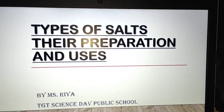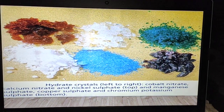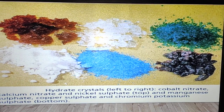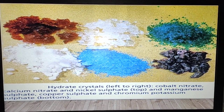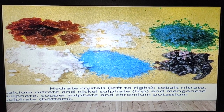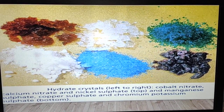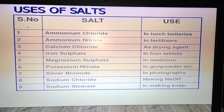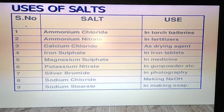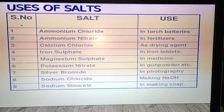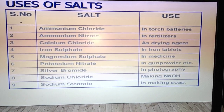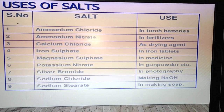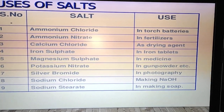Types of salts and their preparation and uses is one of the last topics of this chapter. These are the different colors of salts — hydrated crystals such as cobalt nitrate, calcium nitrate, and nickel sulfate are present in our labs. Uses of common salts include ammonium chloride, ammonium nitrate, calcium iodide — some of these may be asked in your exam. Iron sulfate, magnesium sulfate, and potassium nitrate are used in torch batteries, fertilizers, drying agents, iron tablets, medicines, and gunpowder.